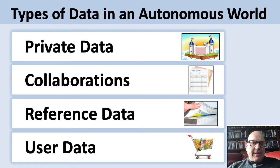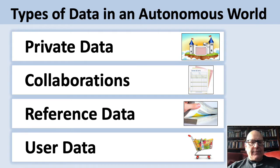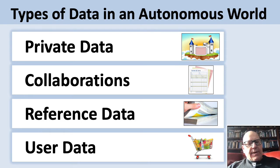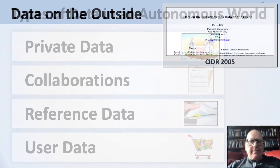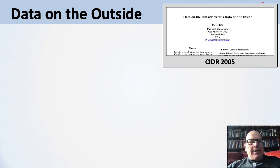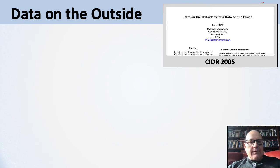Let's talk about the types of data in an autonomous world. There's private data kept inside the autonomous boundary of a fiefdom. There are collaborations, which are actually data — the messages and sequence of messages that flow in and out of the boundary. There's reference data, which is information published from within the fiefdom that can be used to help with collaborations. Finally, there's user data kept private to the emissary running on the outside but incredibly useful to implement the collaboration. I differentiate between data on the outside versus data on the inside — in 2005, I wrote a paper for the database conference CIDR, the Conference on Innovative Database Research, talking about those differences.